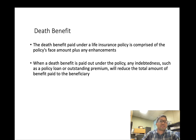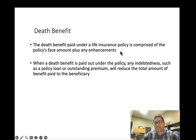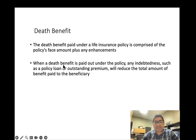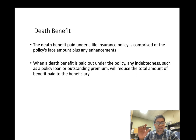The death benefit paid under a life insurance policy is comprised of the policy's face amount plus any enhancements. For example, a participating policy may start with a $500,000 face amount, but due to dividends the accumulated value may have grown above the face value — in that case you get money in addition to the face value. Any indebtedness such as a policy loan or outstanding premium will reduce the total benefit paid to the beneficiary.